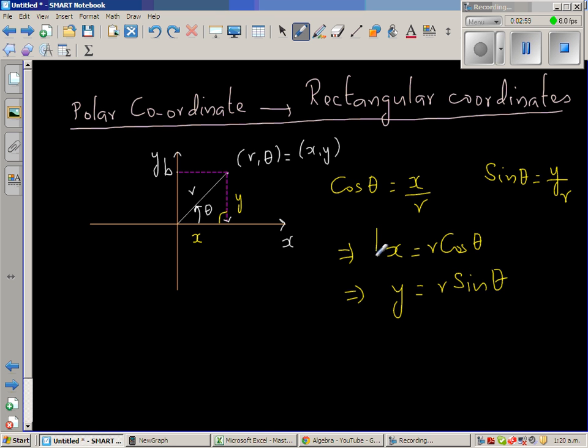So this formula we can use for any conversion from polar form to rectangular form. If you know r and θ, x would be r times cos θ, and y would be r sin θ. So let us take an example.